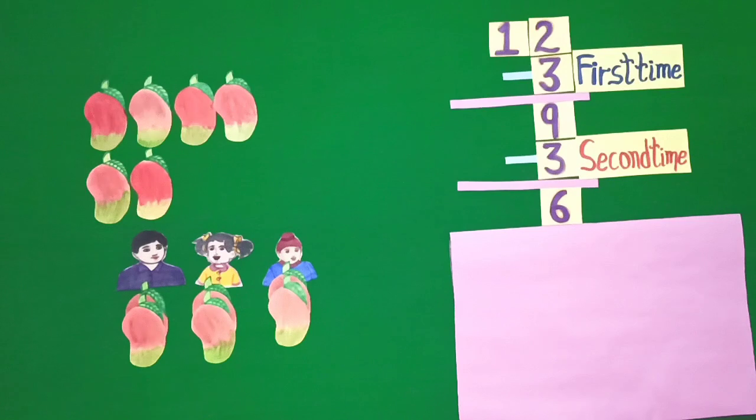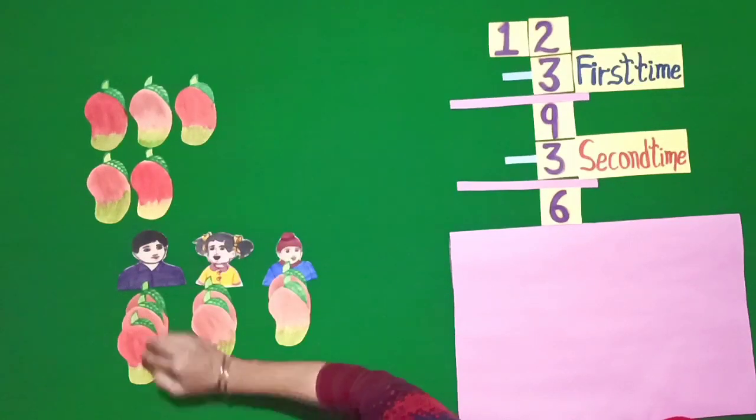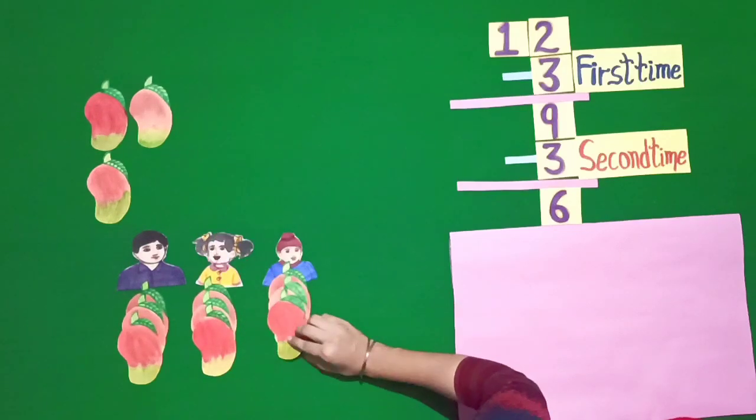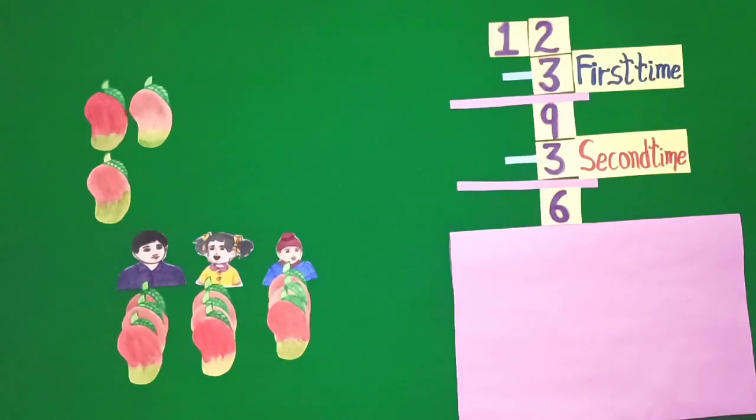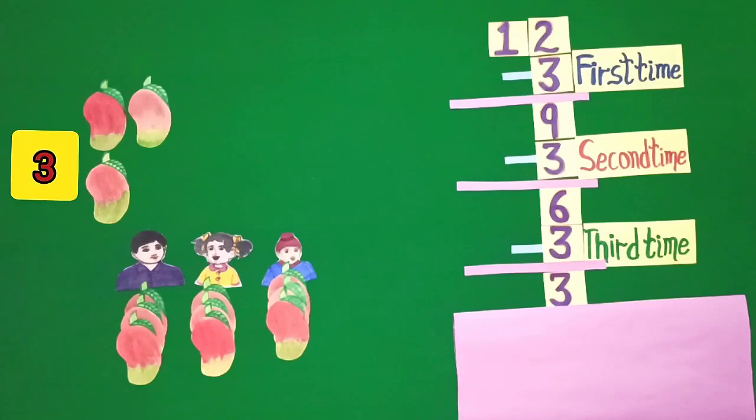Students, I give 1 mango to Aman, 1 mango to Harman and 1 mango to Raman. Now, third time out of 6 mangoes, give 1 mango to each child, we are left with 3 mangoes.